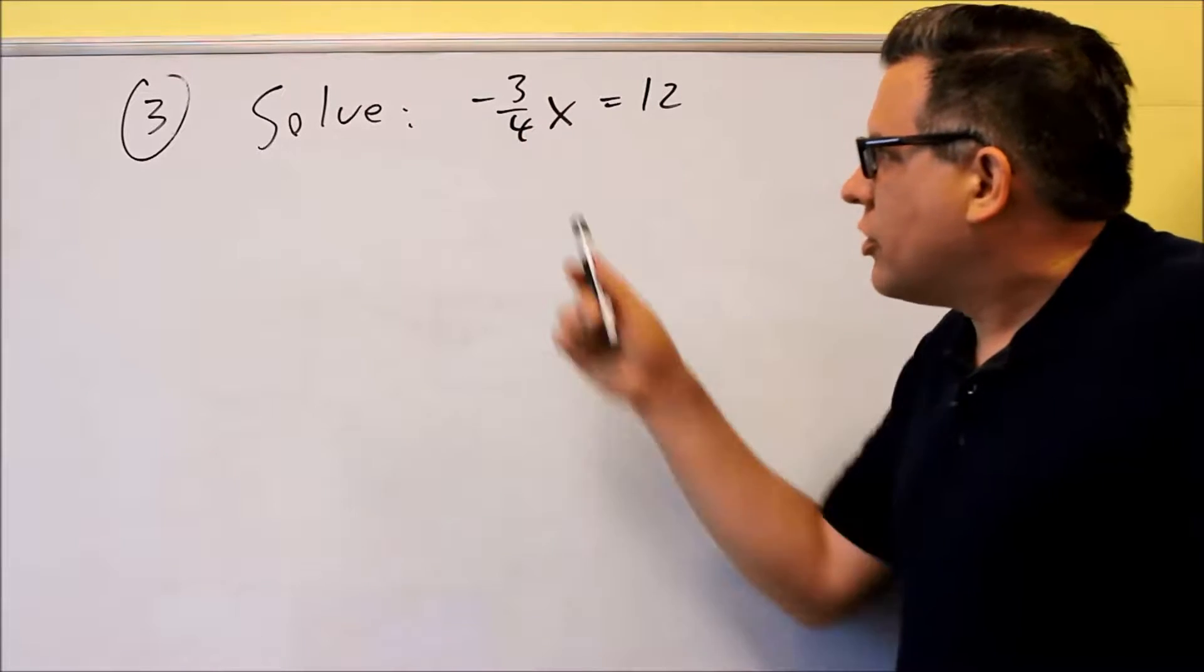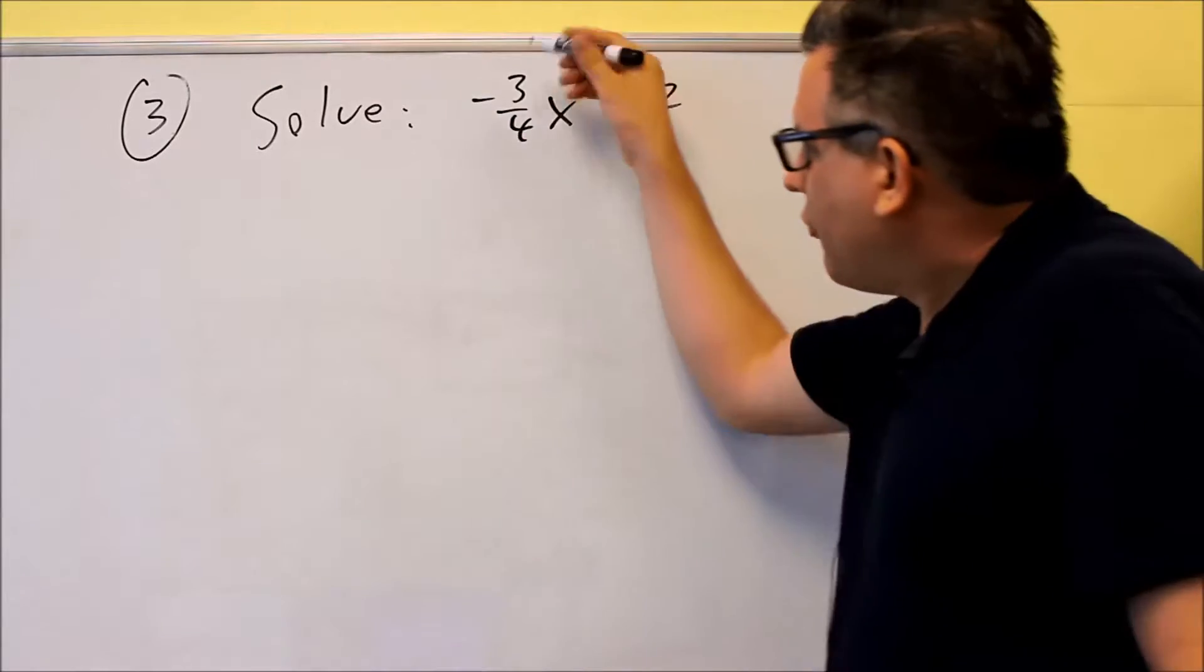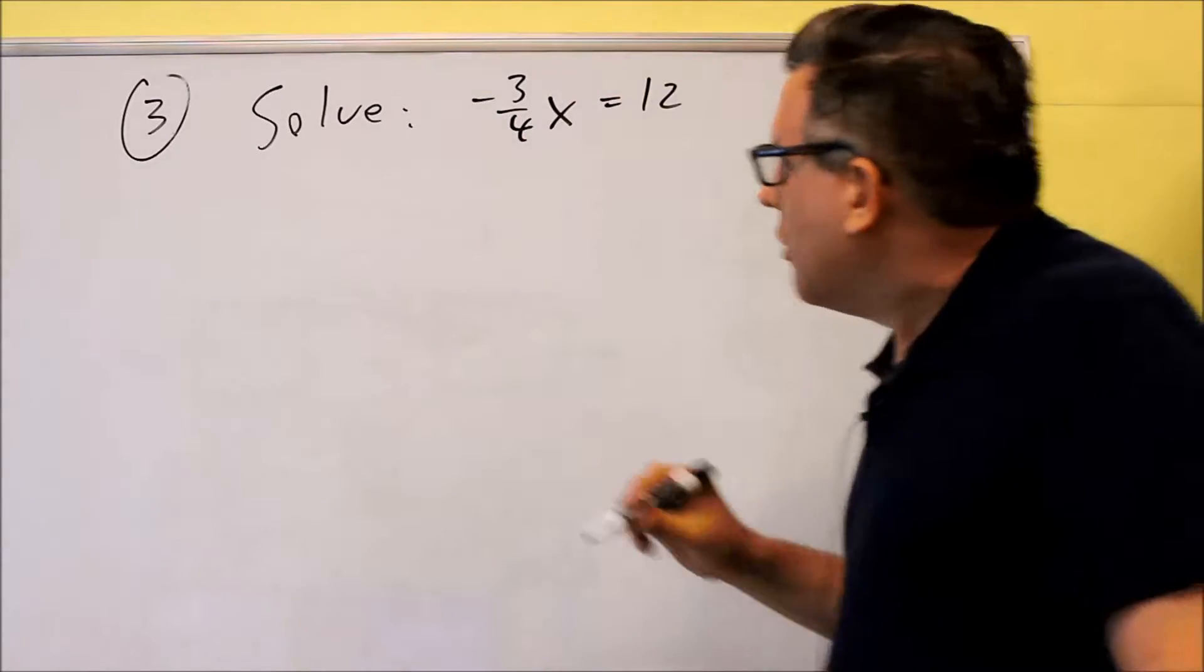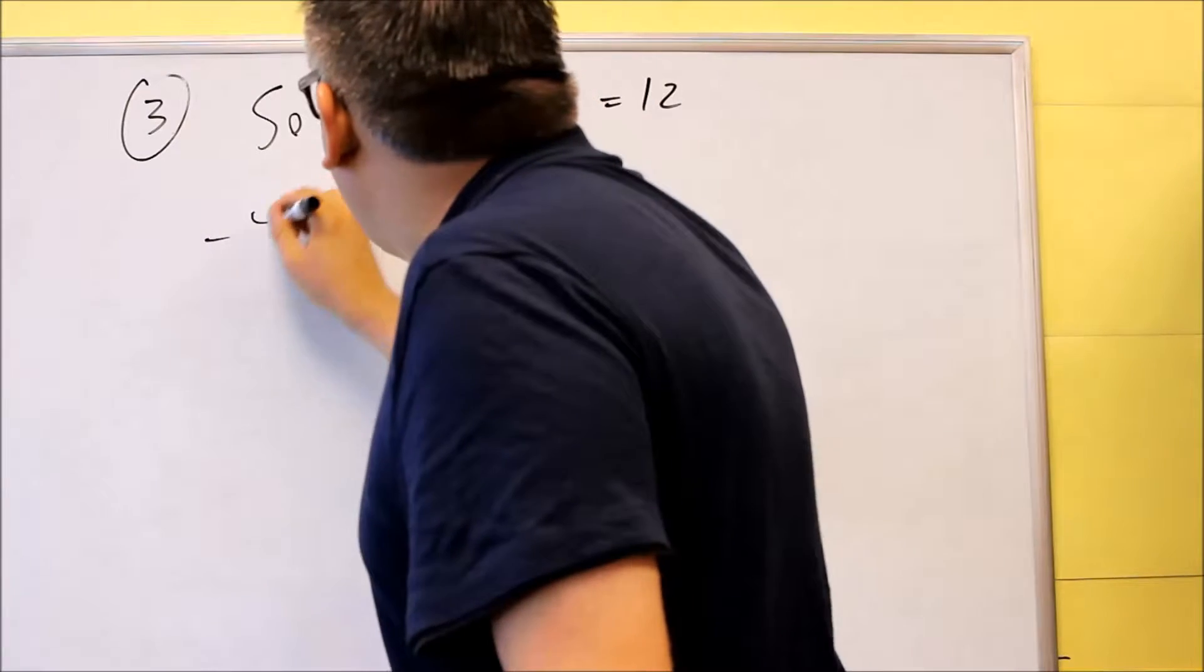So what's the reciprocal? It's just the same fraction with the numbers flipped. We're still going to have the negative sign there as part of your answer. So we're going to do negative four-thirds.